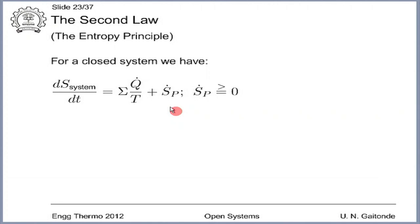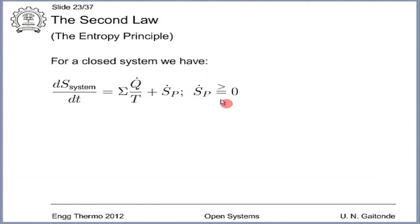Coming back to our second law: if you convert this from a closed system to an open system, what is going to happen? The system here will be replaced by control volume. These two terms will not change, but you will have a term m dot_i s_i minus m dot_e s_e added on to the right hand side.